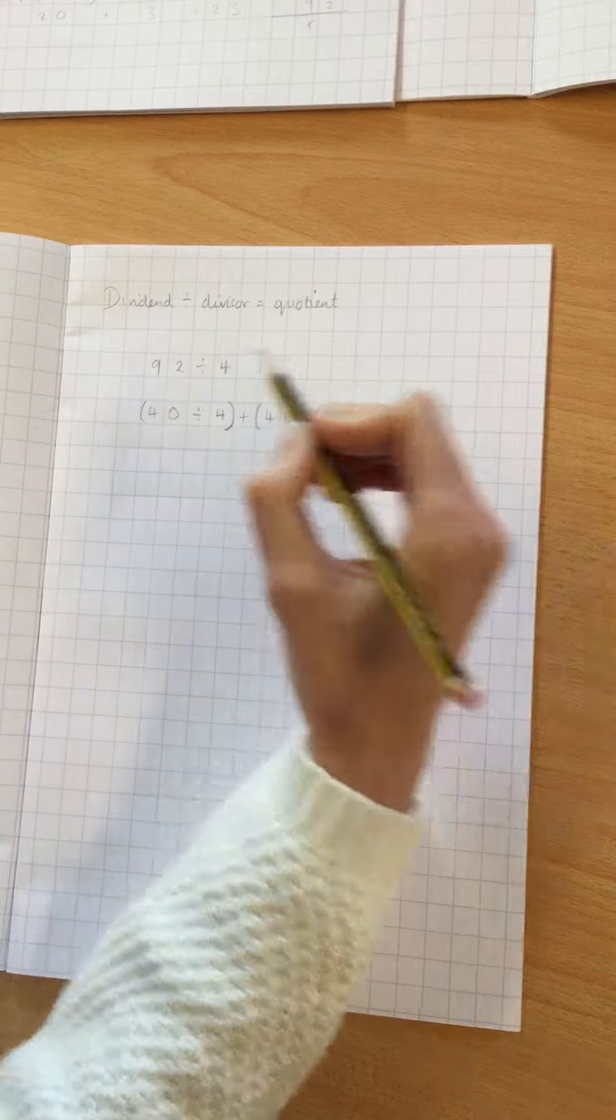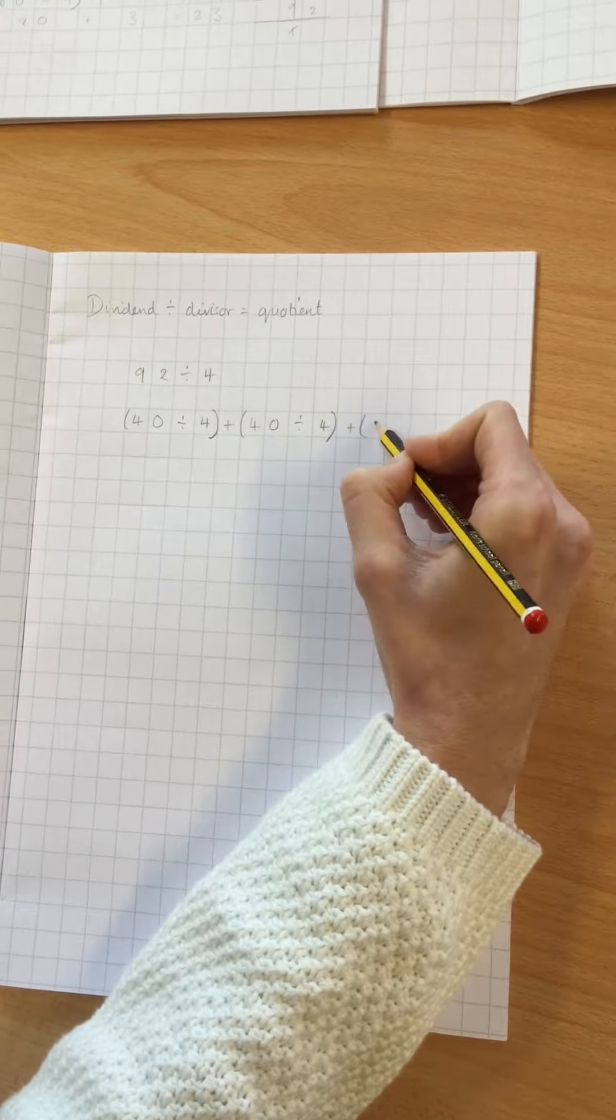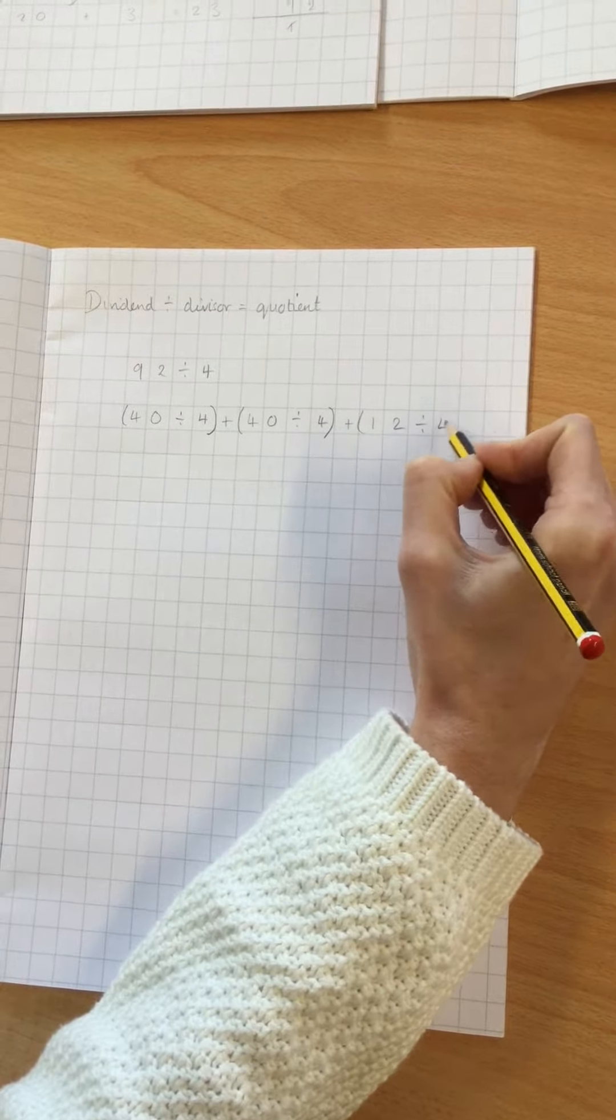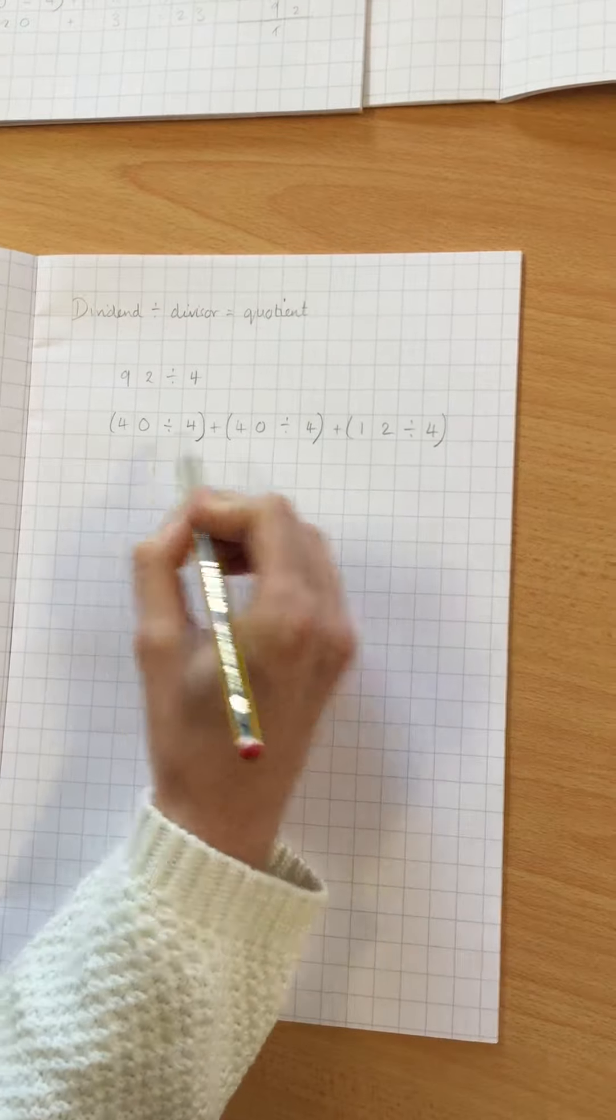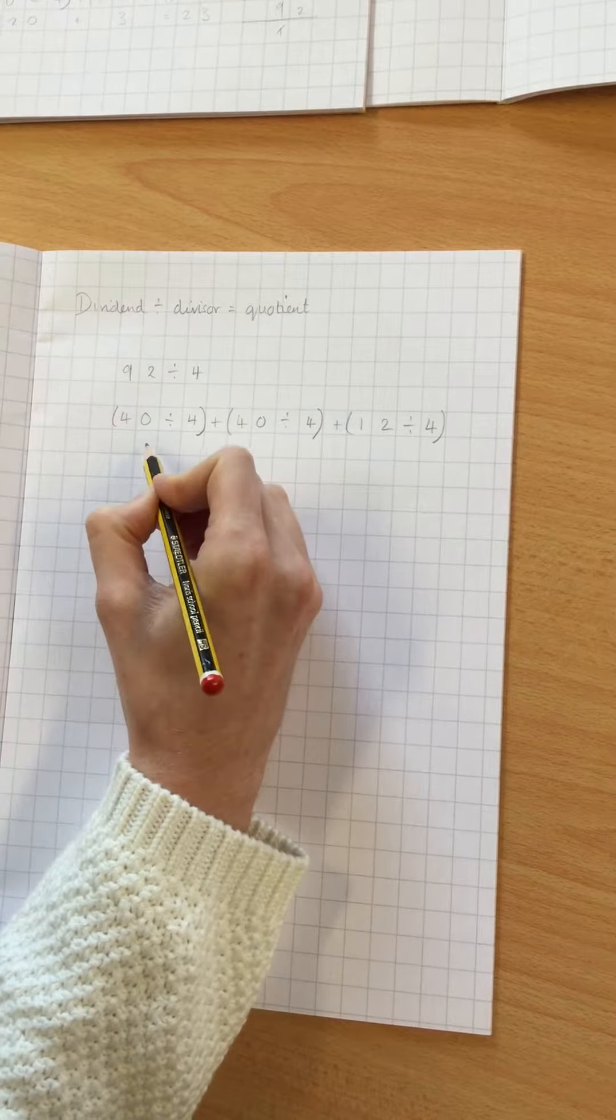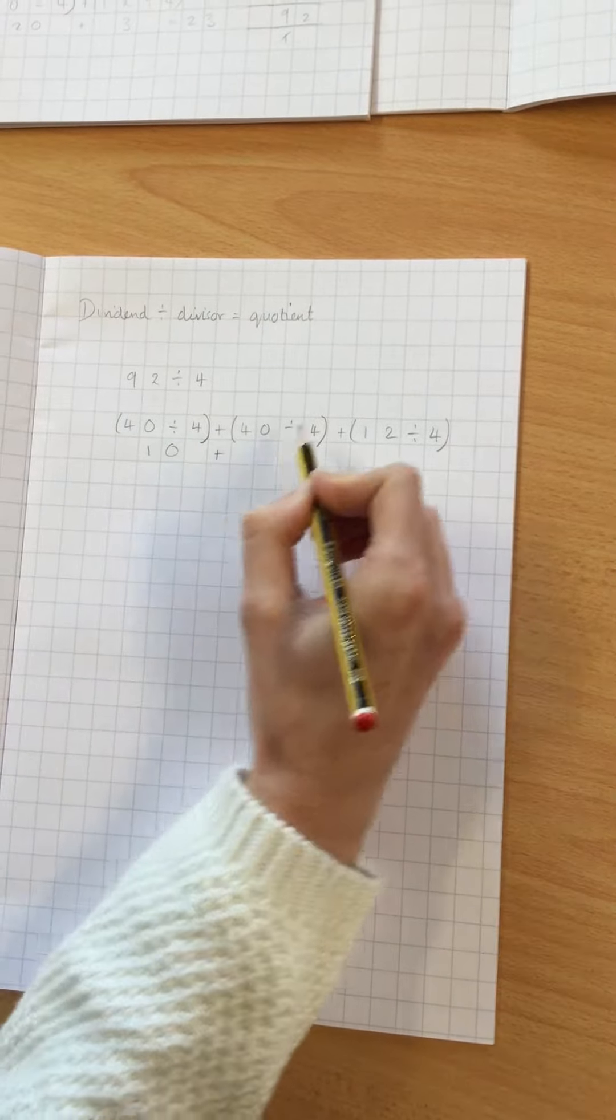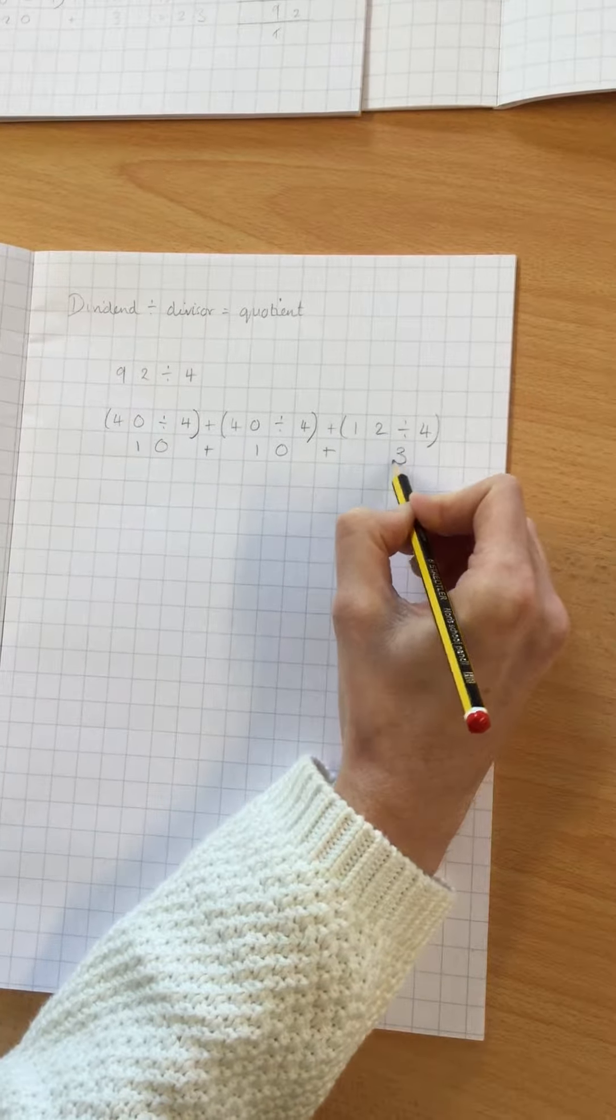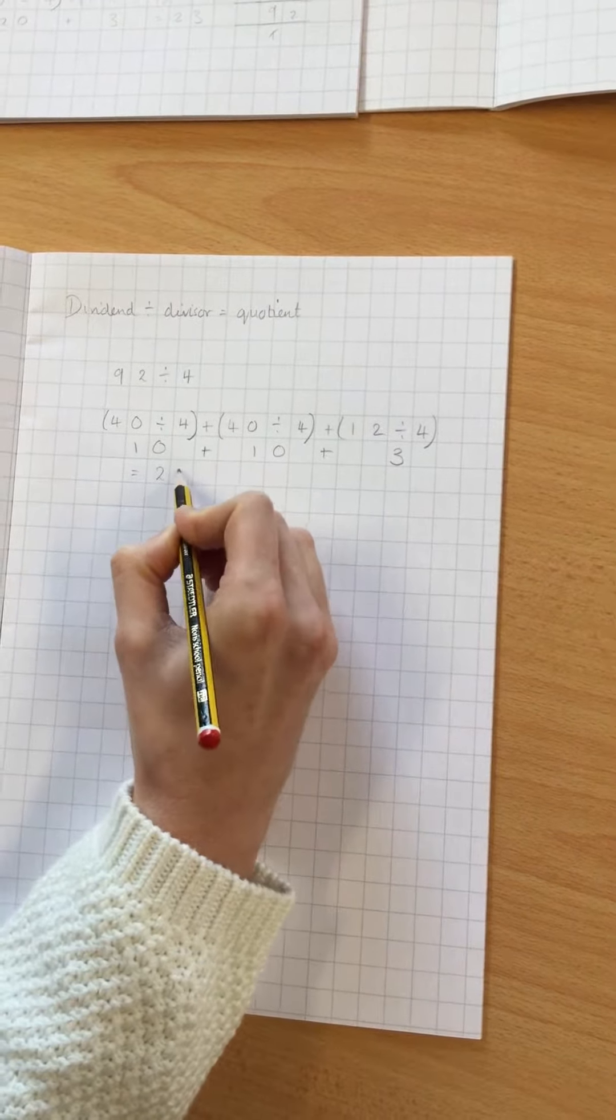40 plus 40 is 80. That leaves me with 12, and 12 is divisible by 4. Now I'll work out the answers for each one. 40 divided by 4 is 10, add 10 again, add 3, which equals 23.